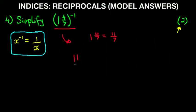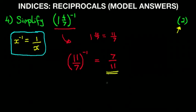So this becomes 11 over 7 in brackets to the power of minus 1. Using our formula, we turn 11 sevenths upside down, so that becomes 7 over 11. And that is our answer: 1 and 4 sevenths to the power of minus 1 equals 7 elevenths. We cannot simplify that any further.